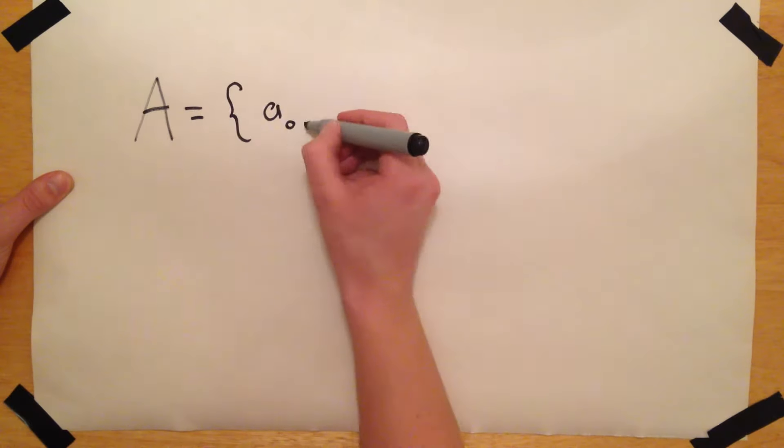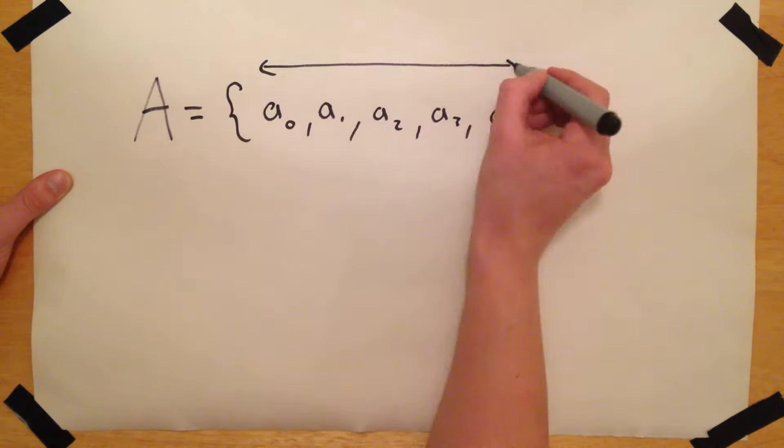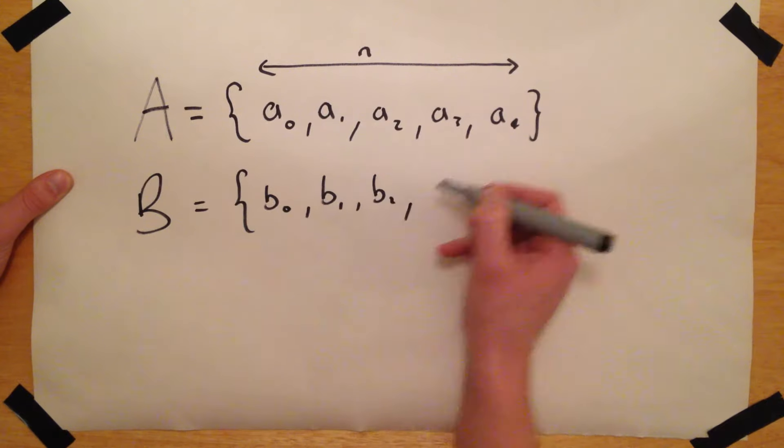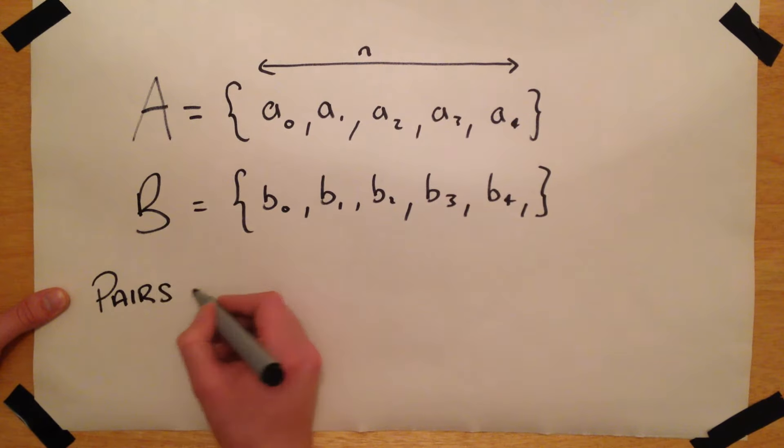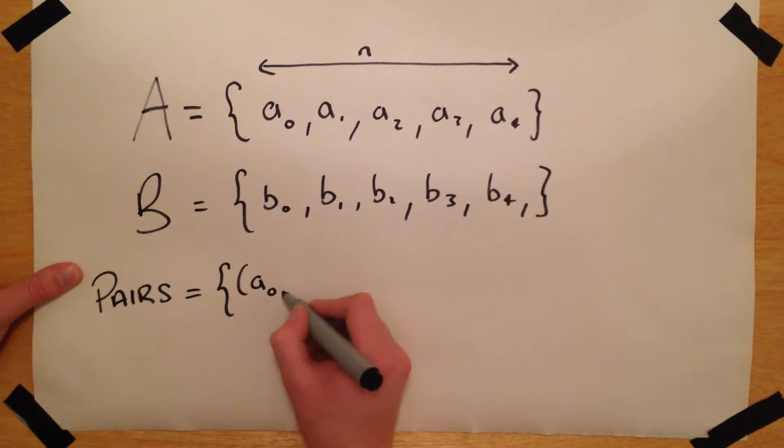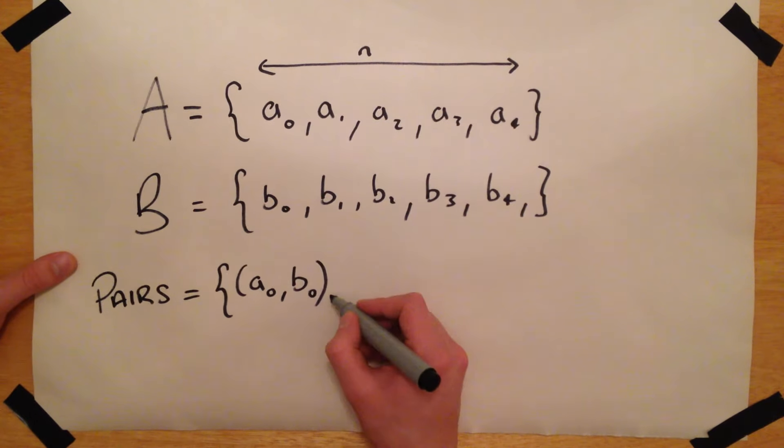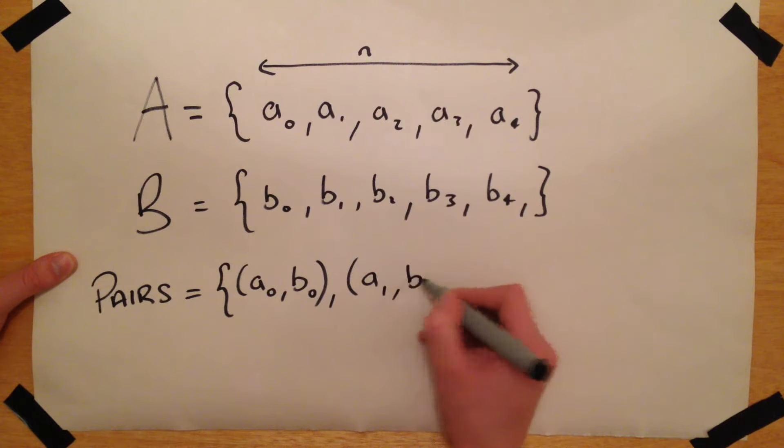In the stable marriage problem, we want to create a set of N pairs using two sets of N people, with one person from each set appearing in each pair. Each individual may only be paired once, and as such the result will be a direct one-to-one mapping between the two sets of people.